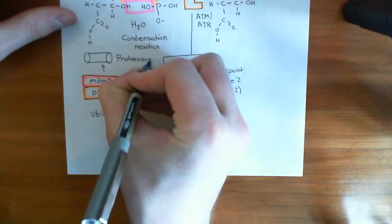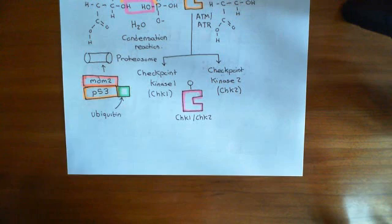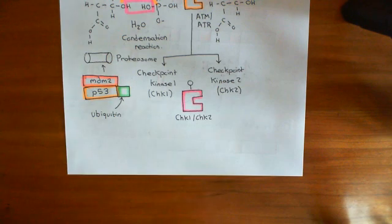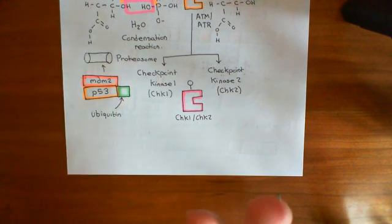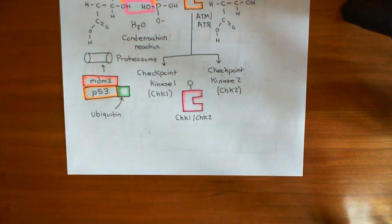So you keep it on a leash, basically. You stop it from working, usually, because you're always making a little bit of it. So what MDM2 does is it initially binds to it, stops it from functioning, then it targets it for ubiquitination, and then that P53 is then destroyed. So it's basically made to be destroyed. So it might seem a bit wasteful, but that's what happens.